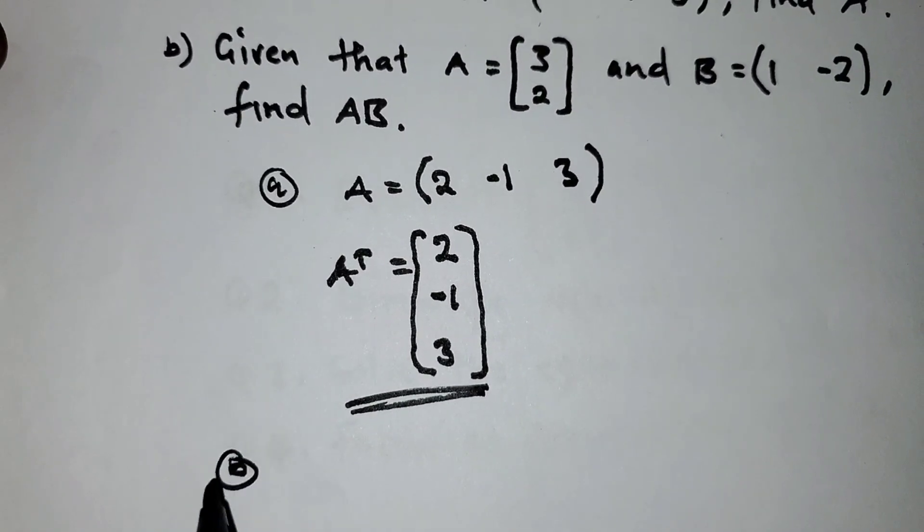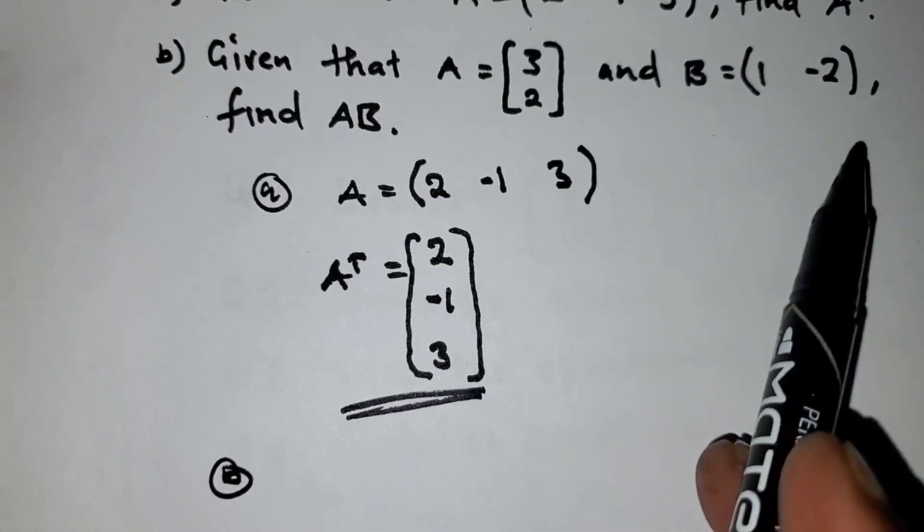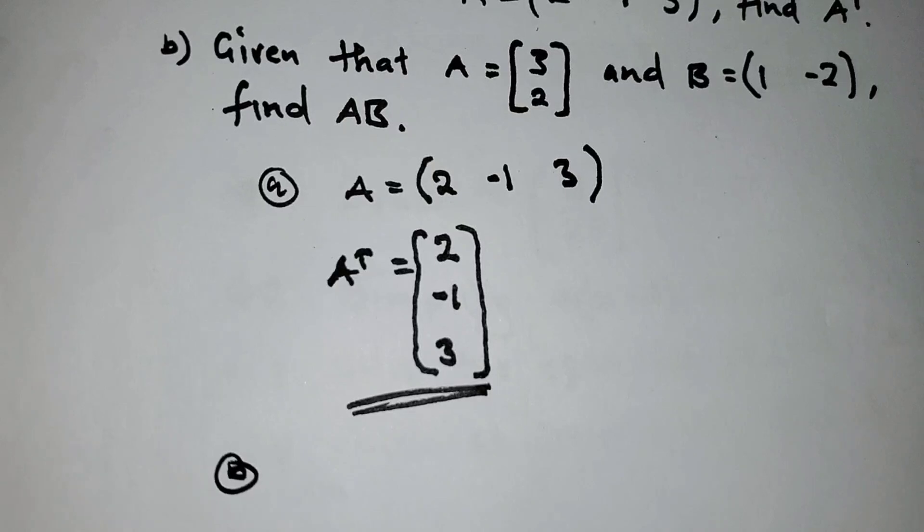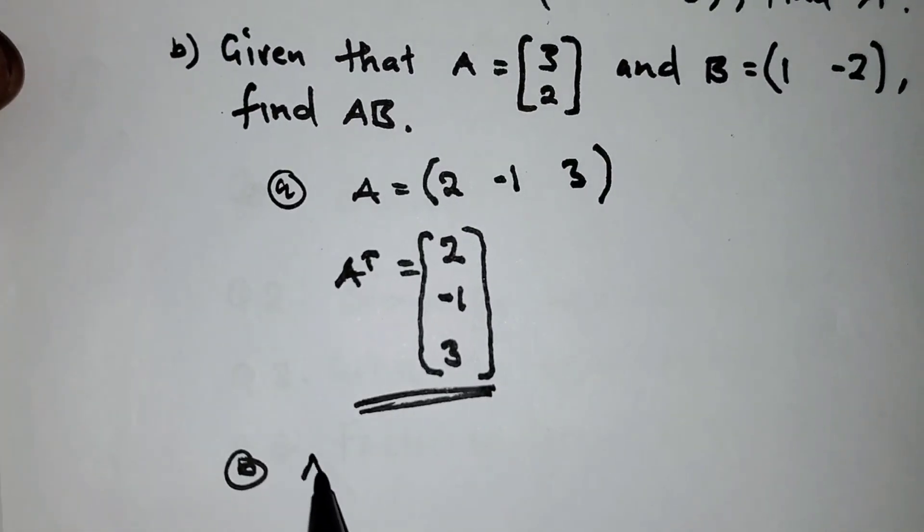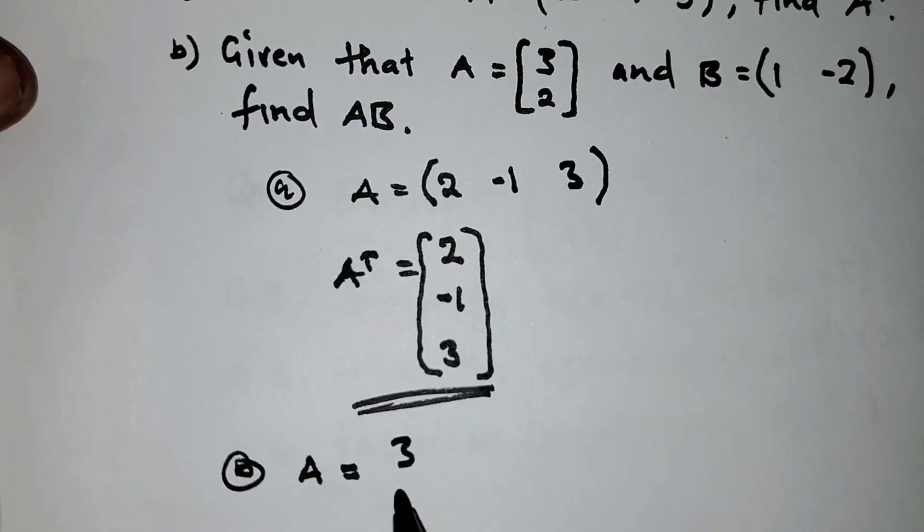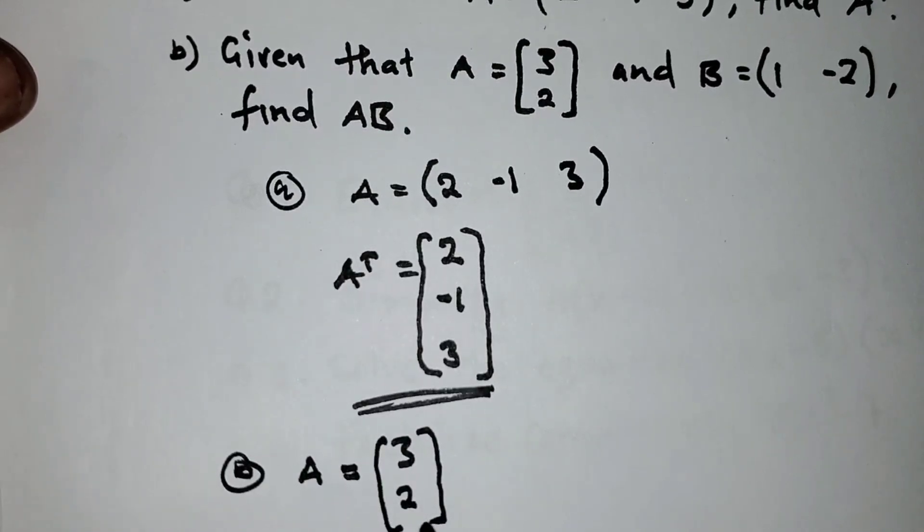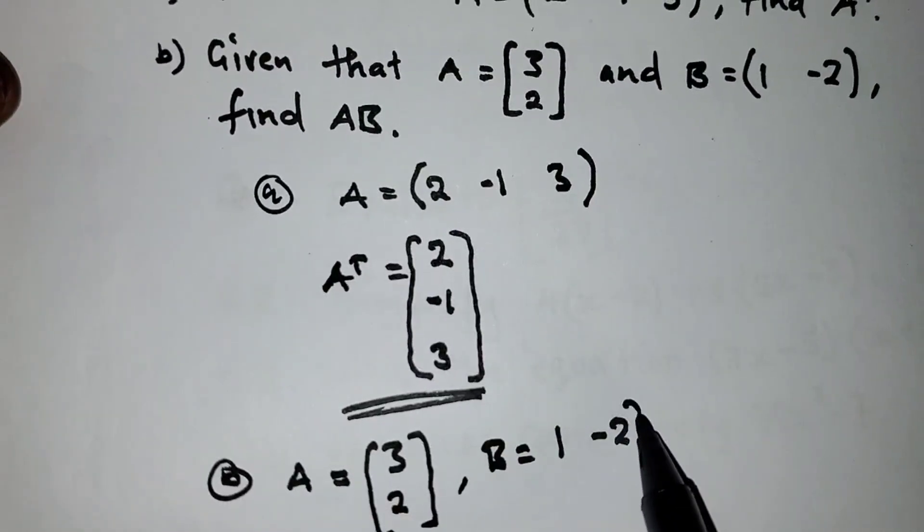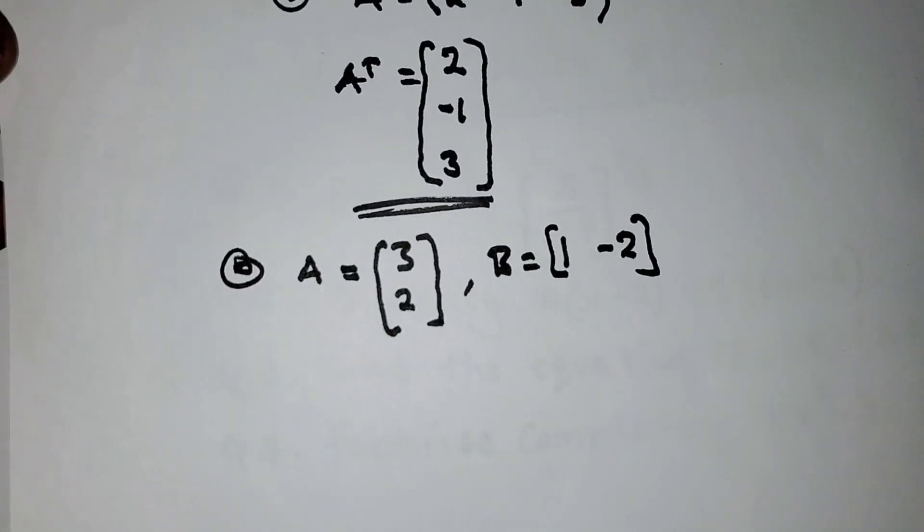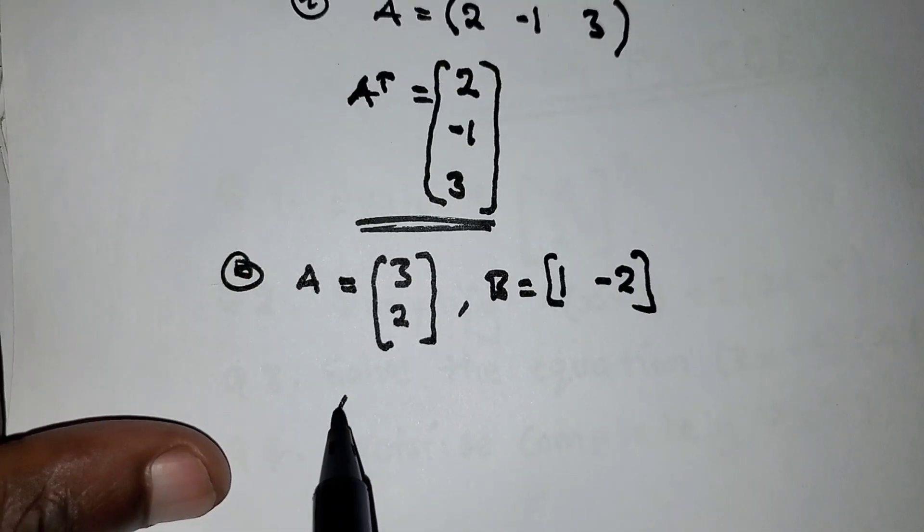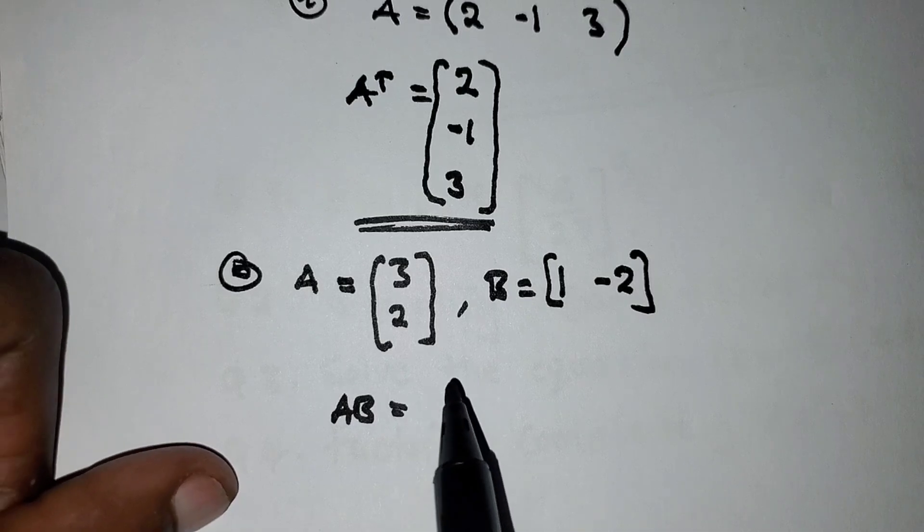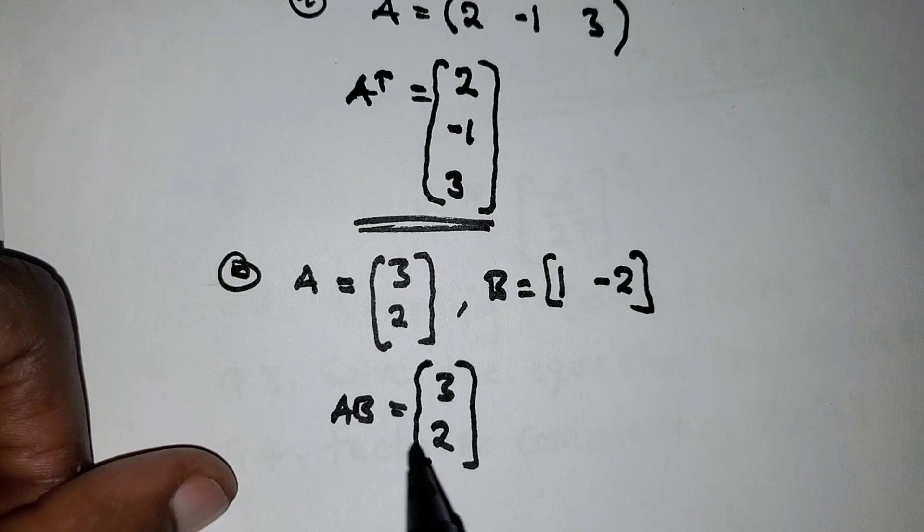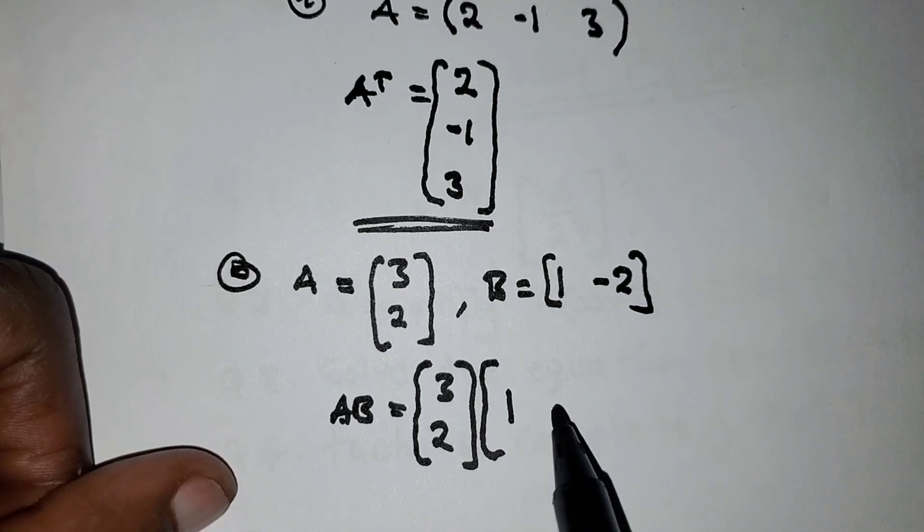For question B, we are given matrix A and matrix B, and we are asked to find AB, which is multiplication of matrix A and B. Matrix A is [3, 2] and matrix B is (1, -2). Then AB is going to be [3, 2] multiplied by (1, -2).